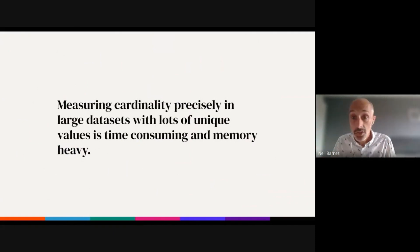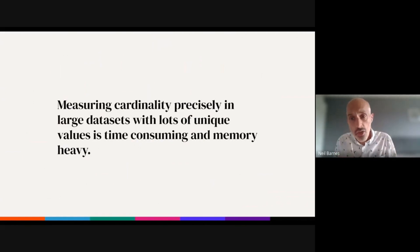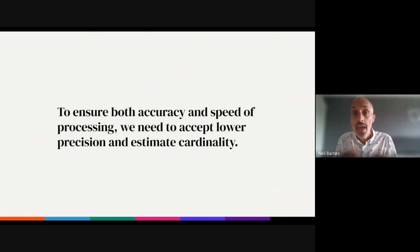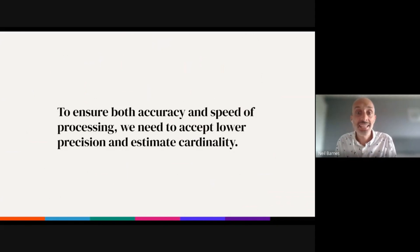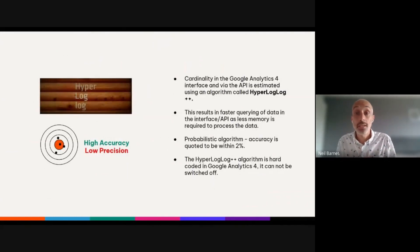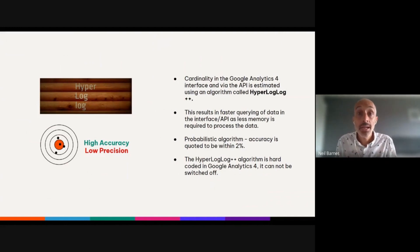Taking this on an even larger scale — for example the users metric in Google Analytics 4, where the data set is large and cardinality is potentially in the hundreds of thousands or millions — it would take huge amounts of memory and processing to get an answer that is both highly accurate and highly precise. Therefore, to ensure both accuracy and speed of processing, we need to accept lower precision and estimate cardinality. This is exactly what the Google Analytics 4 interface does. Cardinality is estimated using an algorithm called HyperLogLog++, which is hard-coded into Google Analytics 4 and cannot be disabled.